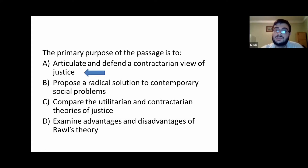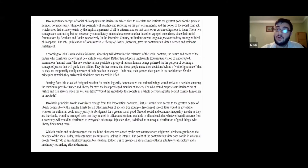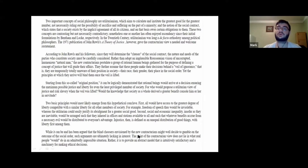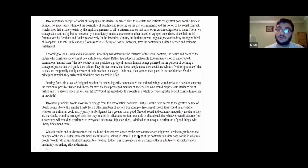Whereas A — 'articulate and defend a contractarian view of justice' — almost the entire passage is solely about contractarianism, explaining it and the different processes and evolutions it went through throughout history with John Rawls. But we want to get to the main point: what is his purpose? He's trying to praise it, he's trying to defend it. And remember, that was one of the main ideas I said is very common — praising or telling the benefits of, or defending, a certain idea.